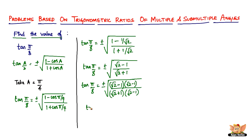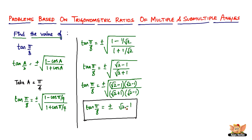So tan(π/8) will be equal to plus or minus the square root of (√2 minus 1) times (√2 minus 1), all over (√2 plus 1) times (√2 minus 1). The numerator becomes (√2 minus 1) squared, and the denominator, using the difference of squares formula a² minus b², gives 2 minus 1 which is just 1. So tan(π/8) equals plus or minus (√2 minus 1).